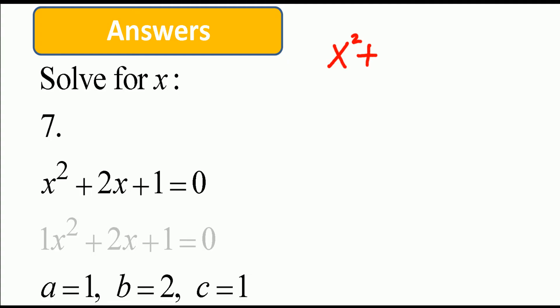x² + 2x + 1 = 0. Compare it with ax² + bx + c = 0. You see that a is equal to 1.